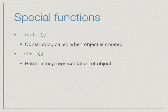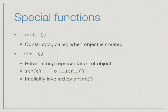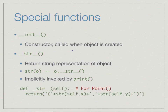Python has other special functions. One common need is to print out what an object contains — the most convenient way is to convert the object to a string. The function str normally converts an object to a string, and there is a special function called underscore underscore str that we can write to define this behavior. This is implicitly invoked when we write str(o), and print implicitly calls str on any name we pass to it.